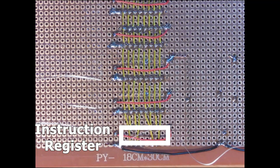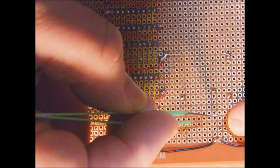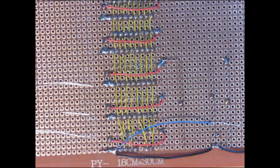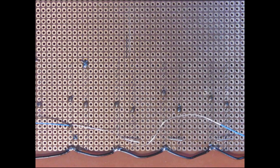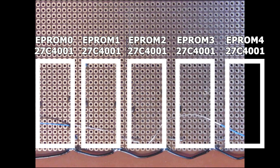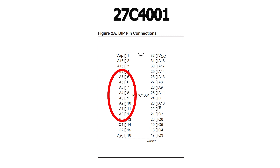The controller EPROM address lines are connected to the W bus through the instruction register — I already connected up these inputs in the first video. Now I need to connect up the outputs from the instruction register to the address lines of the EPROMs. Here's EPROM 0, 1, 2, 3, and 4. Because we're looking at the underside of the board, the pinout for the chip is actually reversed, so the lower address pins are on the right-hand side of the chip rather than the left. I've been tripped up by that more than once.